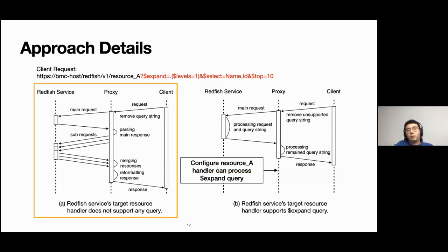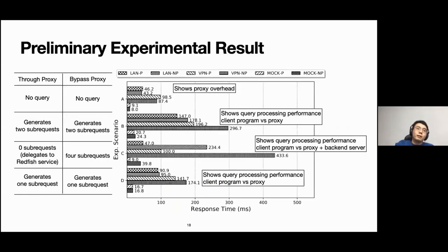Let's assume our module receives a request with a combination of query parameters. If the backend service can process expand query parameters and the module knows that by configuration, then the module delegates processing expand query to backend service and only process the rest of query parameters. It can be much faster than processing all query parameters on proxy server or client-side. If the resource handler can't process any query parameters, then the module processes all query parameters like in figure A.